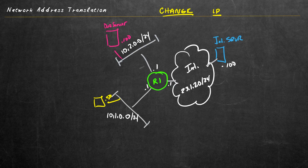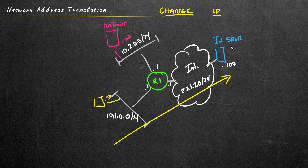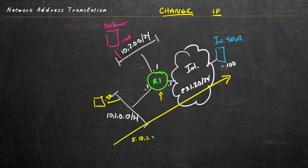If this PC wanted to go out to the internet, the source address on the PC is 10.1.0.50. However, on the public internet, that IP address is not a reachable address. If the packet was even allowed to get to the server, the internet server wouldn't have a route back to this client because it's a private RFC 1918 address space. So the original packet before NAT would be sourced from 10.1.0.50, with the destination address 23.1.2.100 — that's pre-NAT.